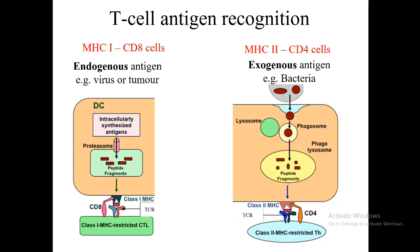MHC2 is generally expressed on a specialized set of cells called antigen-presenting cells. These include B cells, macrophages, and the most effective antigen-presenting cell, dendritic cells. Dendritic cells are critical to antigen presentation of exogenous antigens. Antigen-presenting cells will express exogenous antigens on MHC2 on the surface of the cell, and when they express the antigen on MHC2, that will result in interaction with CD4 cells. CD4 cells are helper T cells.